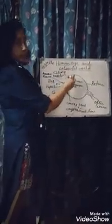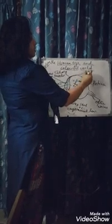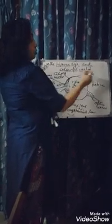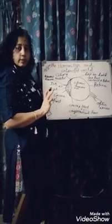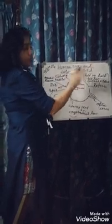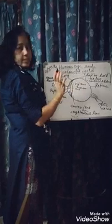Next are your ciliary muscles. The ciliary muscles help to hold the lens and to contract and relax when needed. That we will study further in the chapter. Ciliary muscles help to hold the lens and they contract and relax — what? The lens.